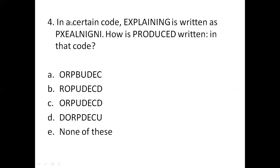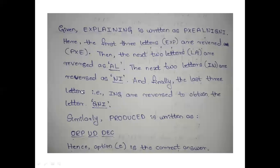Next question is, in a certain code, explaining is written as P-X-E-A-L-N-I-G-N-I. How is produced written in that code? So, our options are given.